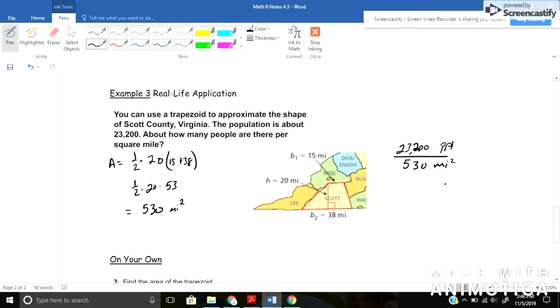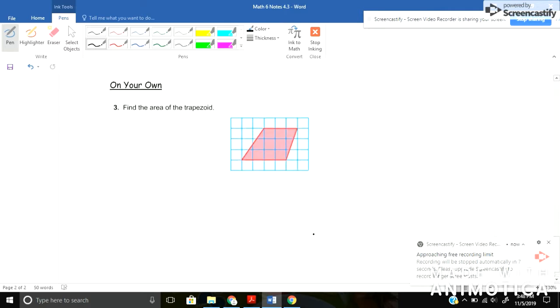And two three two zero zero divided by 530 will give me a total of, now it says forty three point seven seven six seven, but it says about, so I'm just going to go ahead and round that to about forty four people per square mile. Okay, why don't you go ahead and pause the video, try the last one on your own and see what you come up with.